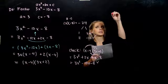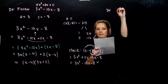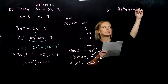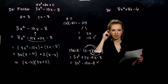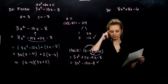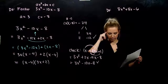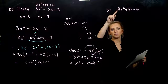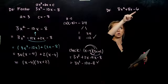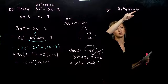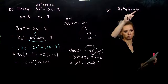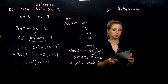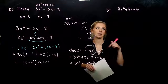Let's go ahead and factor 8x² plus 8x minus 6. Just thinking back to the guessing and checking method, I have a lot of different options: 1 and 8, 2 and 4, 4 and 2, 8 and 1, 1 and 6, 2 and 2, 3 and 2, 6 and 1 — and then all the different combinations. So instead, let's do this AC method.